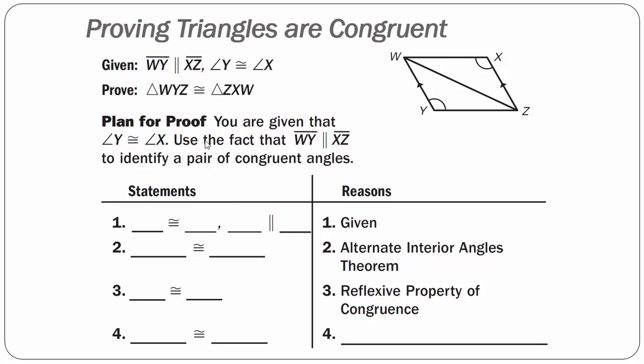Example 2: Proving Triangles Are Congruent. We are given that line segment WY is parallel to line segment XZ. When parallel lines are cut by a transversal, I can use angle relationships — alternate interior angles, alternate exterior angles, corresponding angles, or same-side interior angles — to prove angles are congruent or supplementary. I am also given that angle Y is congruent to angle X. I need to prove that triangle WYZ is congruent to triangle ZXW.